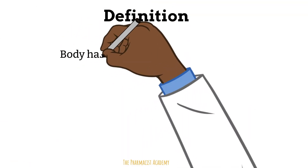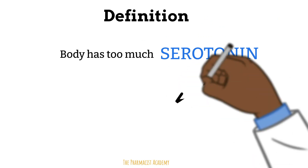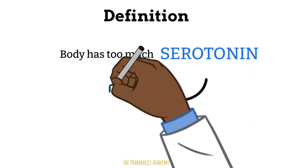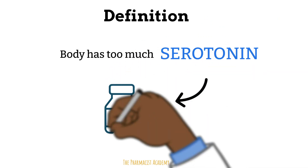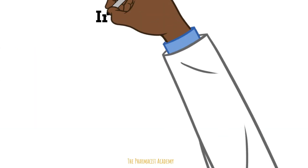Serotonin syndrome is simply when the body has too much serotonin. This is due to the combination of medications that are serotonergic. Let's learn a little bit more about serotonin.